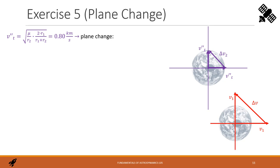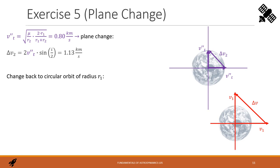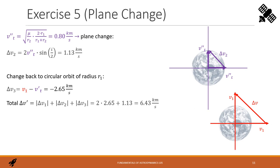The transfer velocity at the apoapsis is 0.8 km/s. Once at the apoapsis, we apply the plane change: delta V2 equals 2 times V_transfer at apoapsis times sin(I/2), giving 1.13 km/s. After the plane change, we remain on the same elliptical orbit, just rotated by 90 degrees. When we come back to the perigee, we apply the third burn to enter the circular target orbit. Delta V3 is V1 minus Vt' — equal in magnitude but opposite in sign to delta V1. The total delta V is the sum of the absolute values of delta V1, delta V2, and delta V3. Since delta V1 and delta V3 are equal, we find a total of 6.43 km/s.